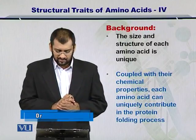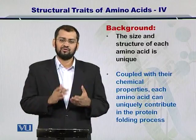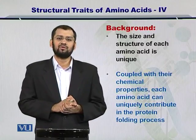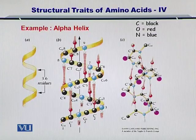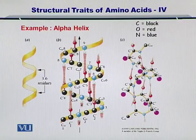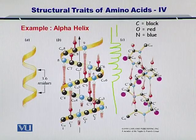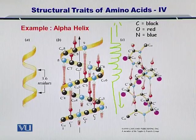So coupled with their chemical properties, each amino acid can uniquely contribute in this process. The example that I want to show you is that of an alpha helix. The alpha helix is essentially a spring-like structure as shown here. You know the everyday example of a spring — if you pull this spring apart, it will come back to its original position.